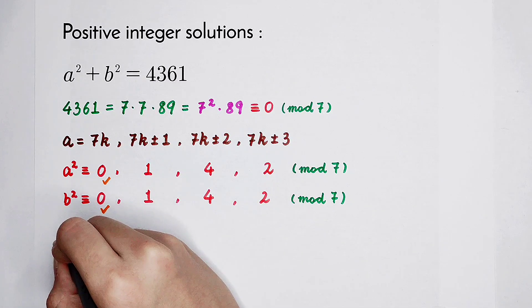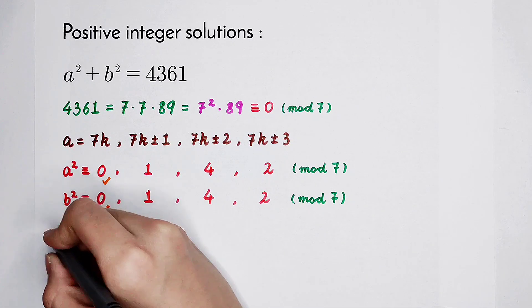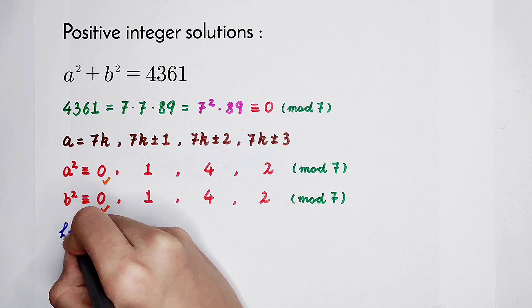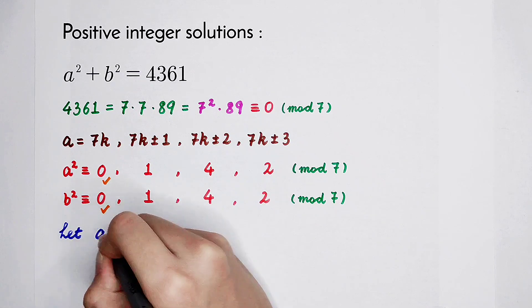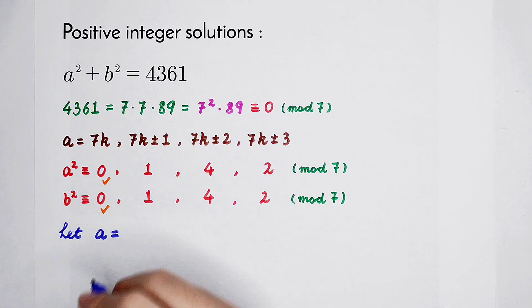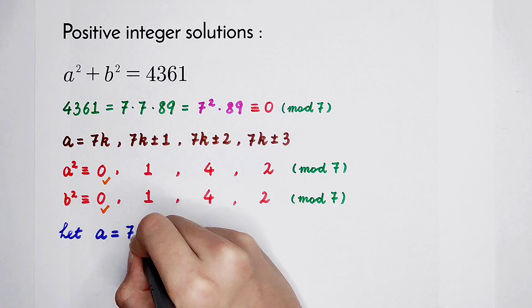Then we can suppose, finally we can let a equal 7 times m.